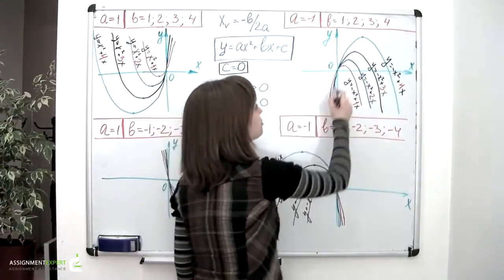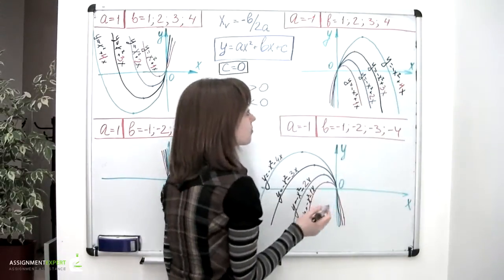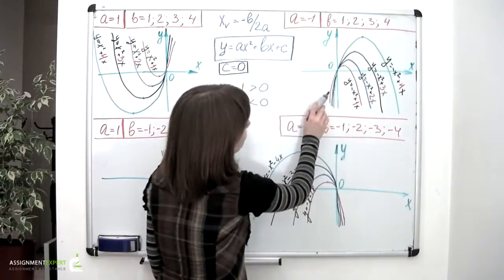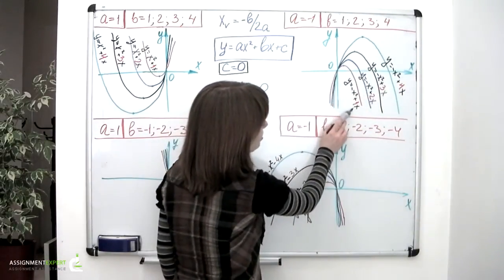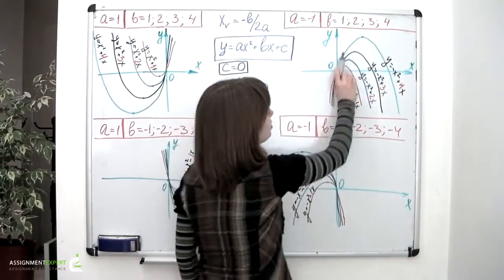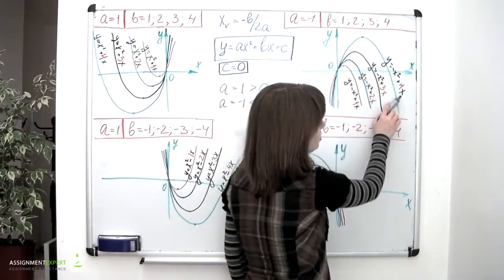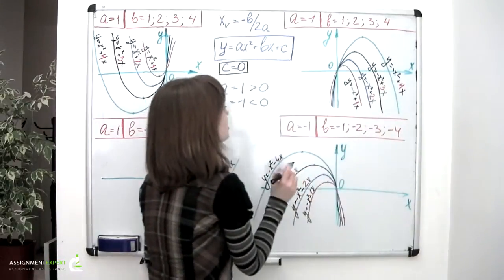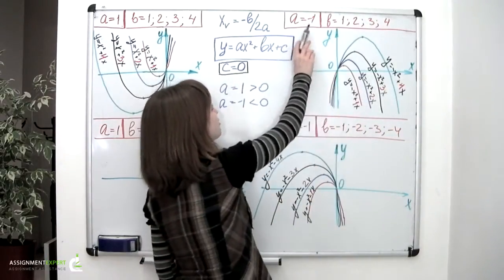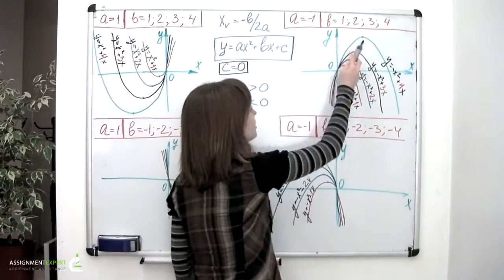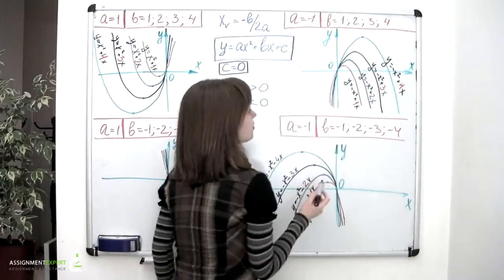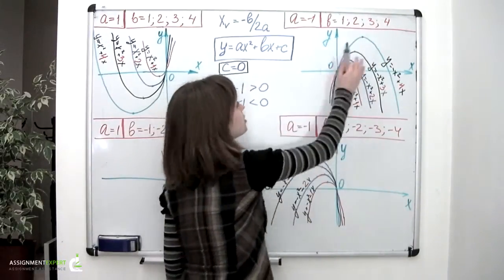Again, we have 4 parabolas directed downwards. The smallest red one being described by an equation negative x squared plus 1 times x. And the widest green one is negative x squared plus 4 times x. So we can see that with negative a, positive b and b increasing, the vertex of the parabola moves upwards and to the right.